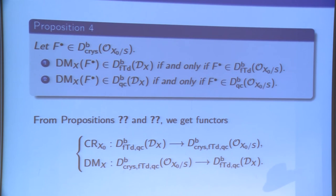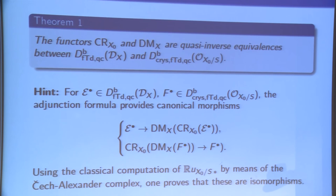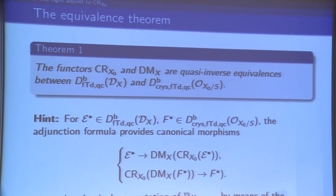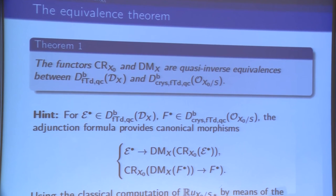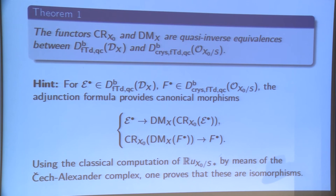So I find two functors: CR_{X_0} from bounded complexes of finite tor dimension and quasi-coherent over D_X to crystalline complexes with the same properties over O_{X_0/S}, and conversely DM_X going the other way. The first theorem in the theory is that these two adjoint functors are quasi-inverse equivalences between these two categories. From the adjunction formula you get maps from the composition, and you use the computation of the direct image Ru_{X_0/S,*} by means of the Čech-Alexander complex to prove this is an equivalence.